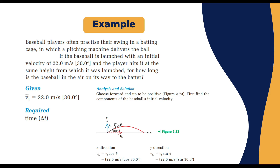Let's take an example. A baseball player practices his swing in a cage with a pitching machine. The baseball is launched with an initial velocity of 22 meters per second at an angle of 30 degrees. The player hits the ball at the same height from which it was launched. The question is: how long does the baseball stay in the air on its way to the batter?